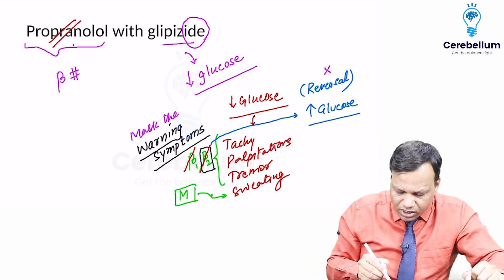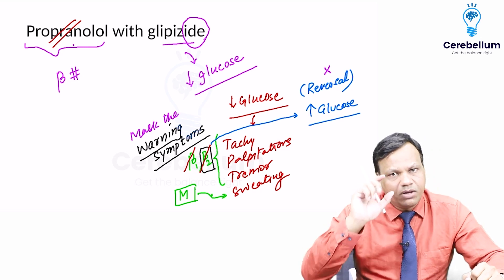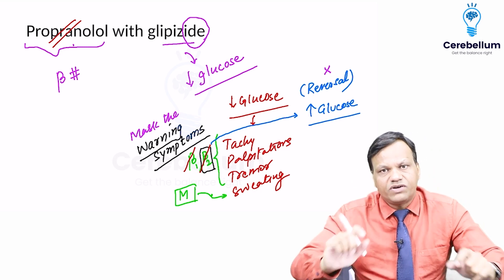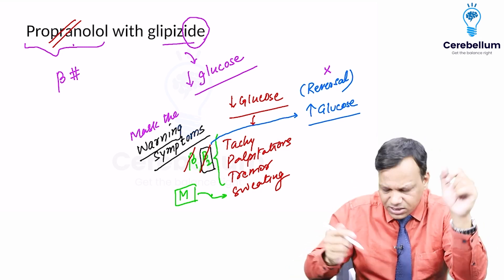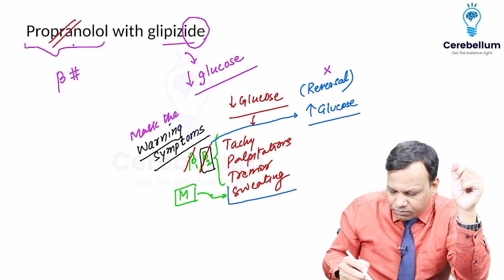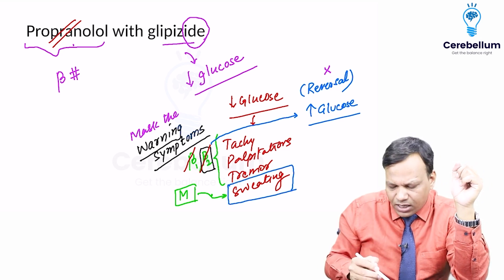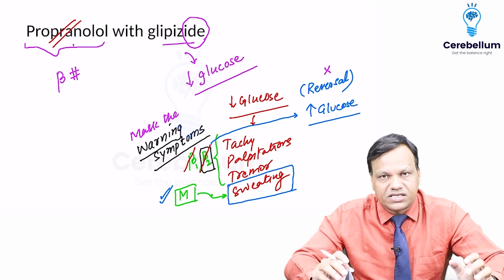Another MCQ asked is: which symptom of hypoglycemia will be present even if a person is taking beta blockers? That symptom is sweating, because sweating is not mediated by beta receptors — it is mediated by muscarinic receptors.